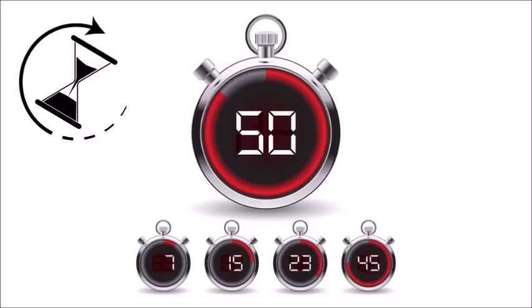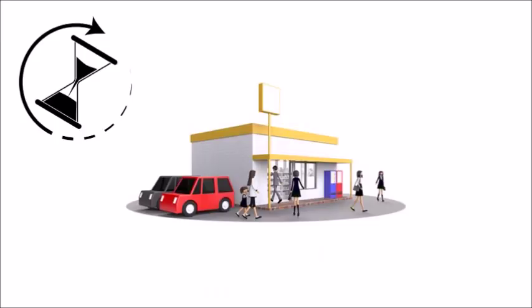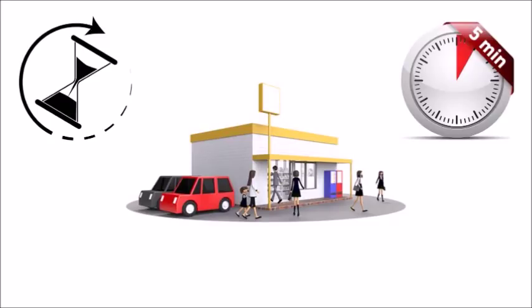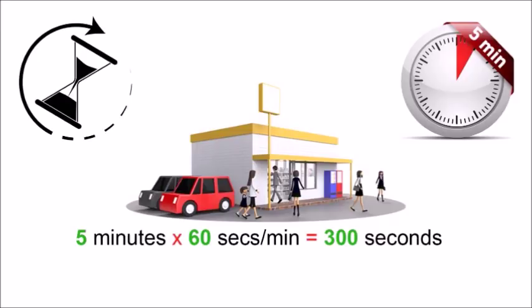Also, be sure to strategically calculate your loop time. In digital advertising, loop time is the length of time in which all your combined ads run from beginning to end. So if you are placing ads in a convenience store, note the average amount of time one spends in a convenience store is about 5 minutes. 5 minutes times 60 seconds per minute equals 300 seconds. Divide 300 seconds by 10 seconds per ad equals 30 ads — you can fit 30 ads in a convenience store.